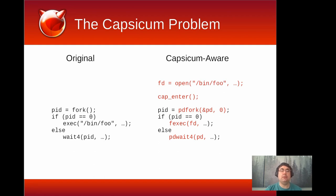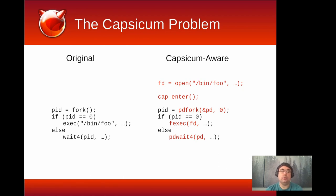We pre-open the executable, then cap_enter to enter our sandbox. At the point where we wanted to actually execute it, we have to use pdfork instead of fork. We can no longer call exec, because exec is accessing a global path, and we're not allowed to access global namespaces in Capsicum mode. So we have to change the exec into an fexec. And finally, the parent would have to use pdwait — which hasn't been upstreamed yet — or some equivalent syscall that waits on the child process, because waitpid is no longer accessible since the PID namespace is a global namespace.